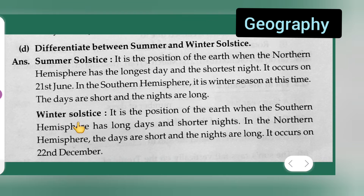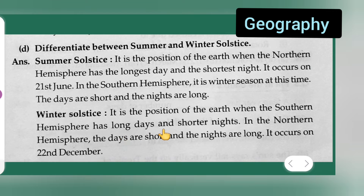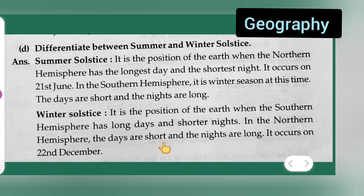Winter solstice: it is the position of the earth when the southern hemisphere has long days and shorter nights. In the northern hemisphere, the days are short and the nights are long. It occurs on 22nd December.